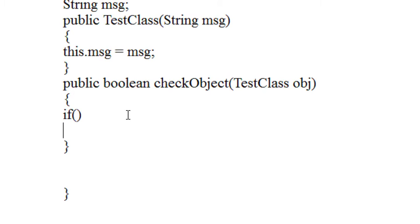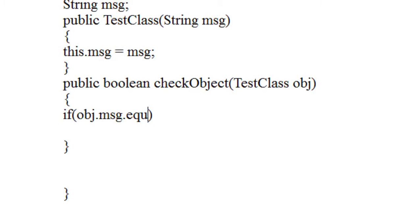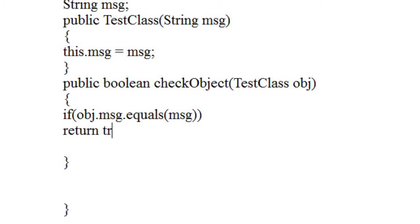I just create an if statement here. I am going to check the values for two objects, whether those values are equal or not. I am going to compare the values of two objects, accessing the variable using this object: obj.msg.equals. It is not possible to use double equals because it is a string value, so we need to use the .equals function to compare string values. If obj.msg equals msg, then it will return true.